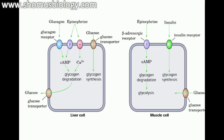Now let's look at the hormonal regulation of glycogen metabolism. We saw two different states: the well-fed state and the starved state, linked with two phenomena — glycogenesis (synthesis of glycogen) and glycogenolysis (breakdown of glycogen into glucose). Both of these processes occur in two types of tissues: liver cells and muscle cells. Let's look at the actual mechanism of these processes in detail.